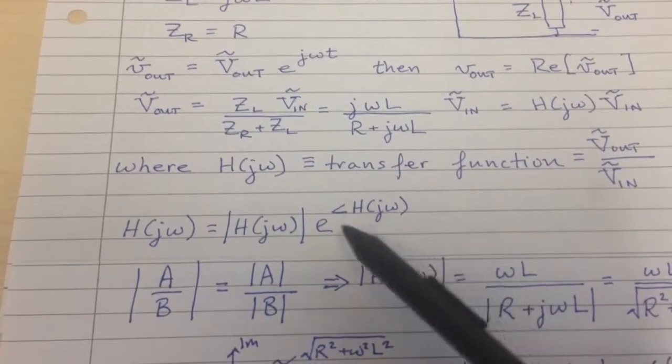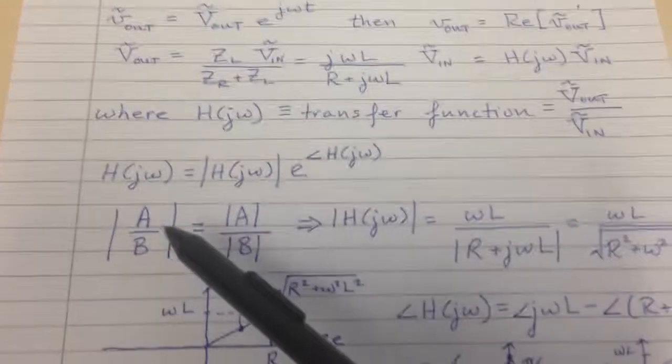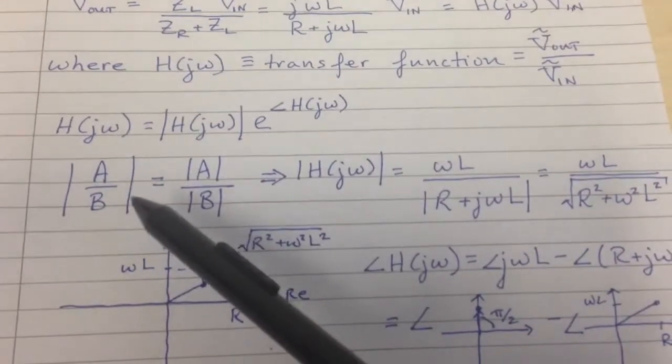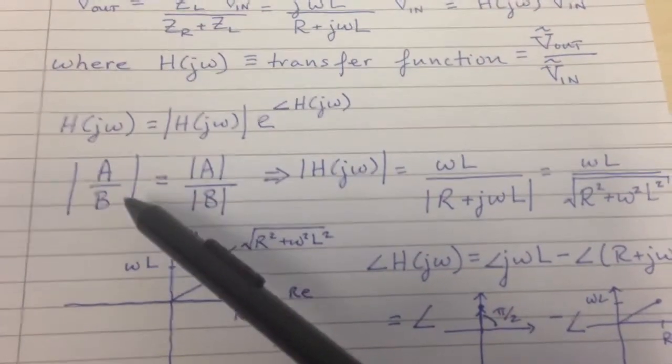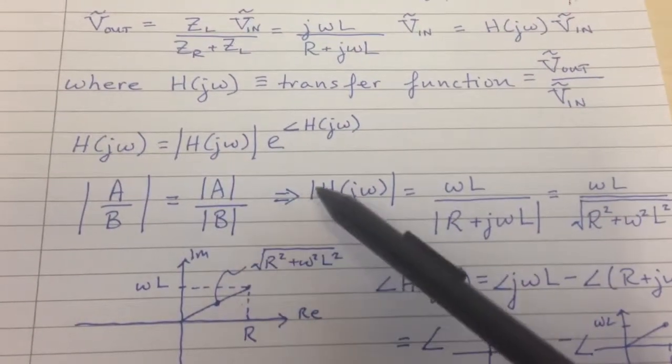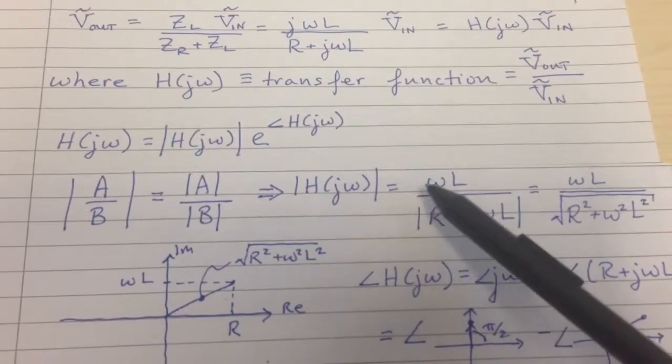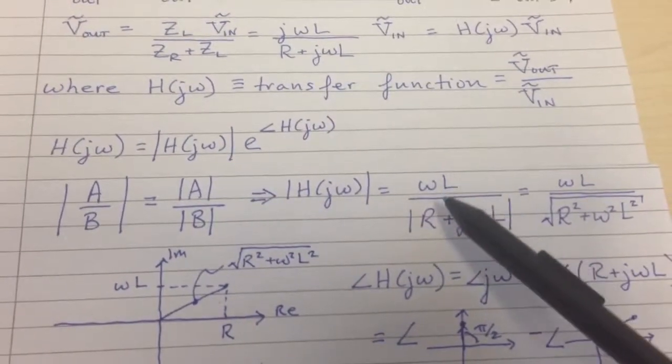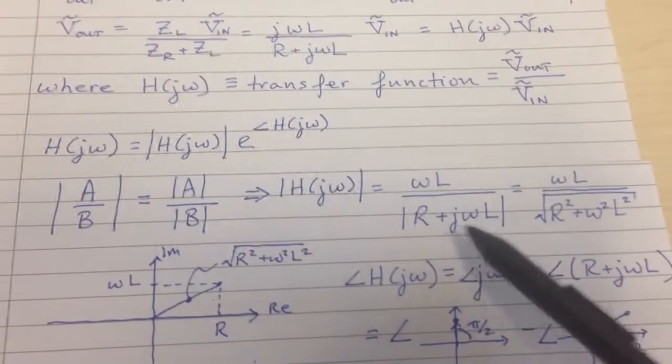That's a polar notation form of that function. And remembering that the magnitude of a quotient is just the quotient of the magnitudes, we can take the magnitude of H(jω) easily. jωL, the magnitude is just ωL.